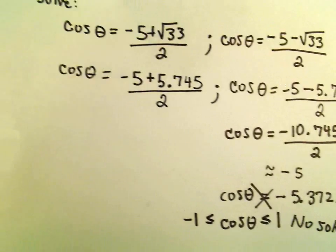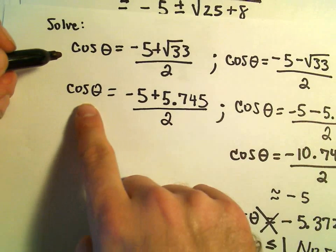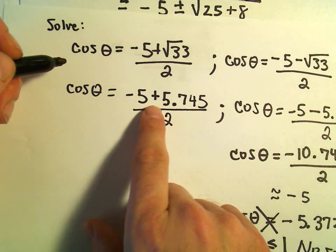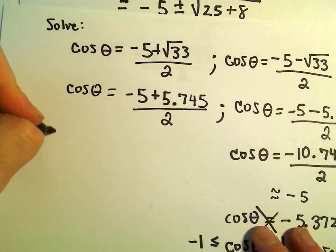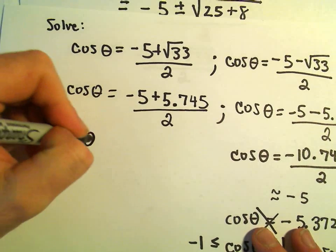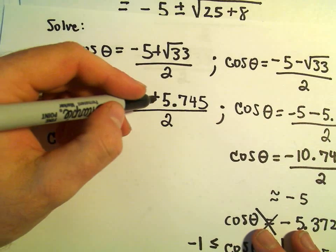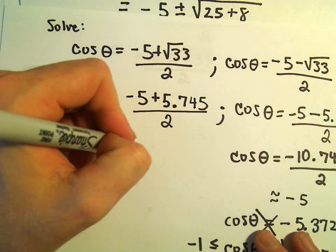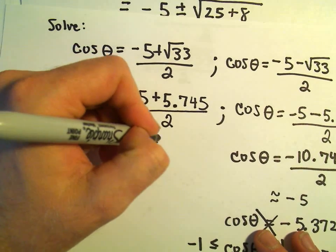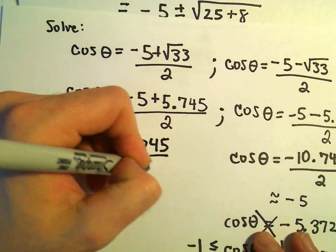Well, let's look at the other one. If we think about cosine theta equals negative 5 plus 5.745 over 2, this one is going to have a solution. So we'll take negative 5 plus 5, which will just give us 0.745 over 2.